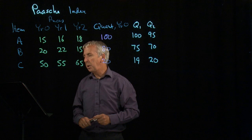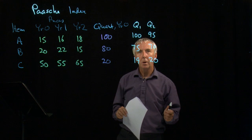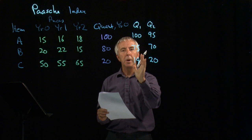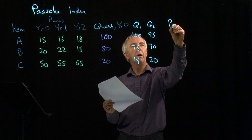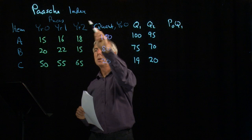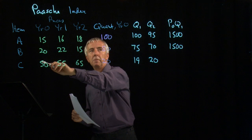For example, to find the change from year zero to year one, we look at the prices or total costs in year zero but using quantities of year one. So to compare year one with year zero, we use the year one quantities. We get prices in year zero times the quantities in year one — so that's 15 times 100, 20 times 75, and 50 times 19, which is 950.